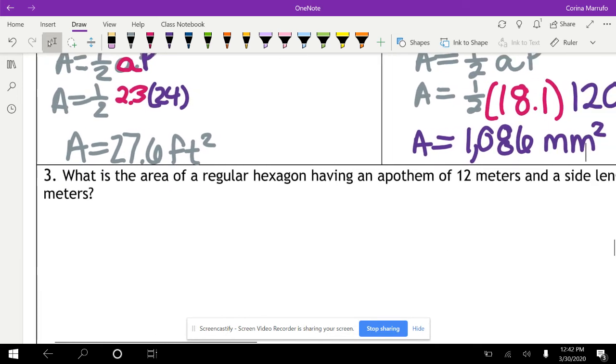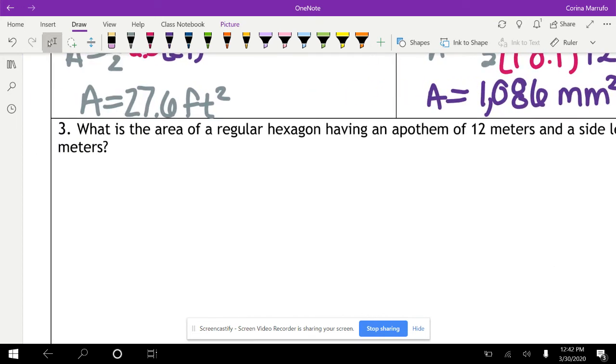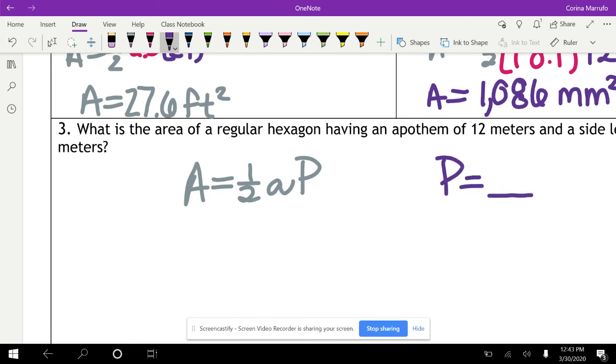All right. And for the last one, it says, what is the area of a regular hexagon having an apothem of 12 meters and a side length of 10 meters? So let me write down the formula real quick. Area equals one half little a, which stands for the apothem, and P, that stands for the perimeter. And so usually on all of these, we need to take the perimeter. And depending on how many sides it has, that's what we're going to multiply by each side to find the perimeter. So if I look here, just reading through the problem, it says, what is the area of a regular hexagon? Since they tell us that this is a hexagon, it means that it has a total of six sides.